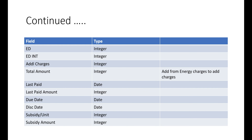ED is an integer — any extra discount or similar charge. ED installments are also a fixed integer. Additional charges default to zero if none are applicable. Finally, the total amount is an integer — calculated by adding energy charges, consumer charges, customer charges, and all additional charges together. This is auto-populated and does not require manual entry.